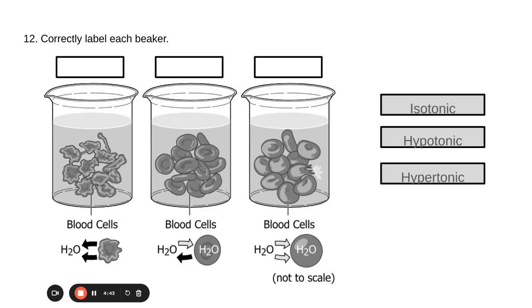The second thing to remember is hypo, hippo. Hypotonic cells swell like a hippo. So that means that beaker number three is the hypotonic solution.